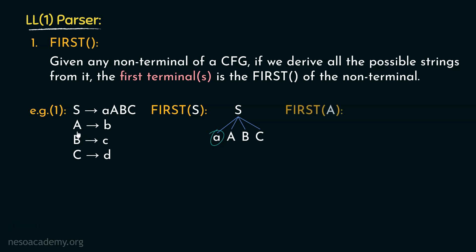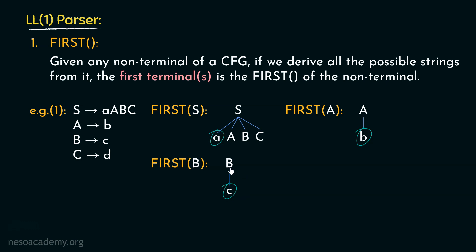Let's find out the first of A. From A, we can only derive the terminal symbol 'b'. So this is going to be the first of A. What will be the first of B? From B, we can derive 'c' — following this production rule, B can be rewritten as small 'c'. Therefore, this is the terminal which is going to be the first of non-terminal B. Now we are only left with C, and C can be rewritten as 'd'. So the first of C is going to be 'd' only.